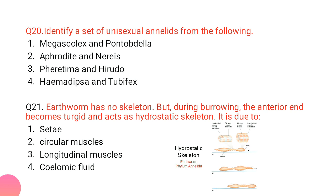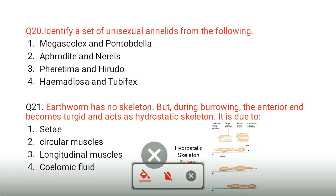Unisexual annelids: in annelids, only one class has unisexual organisms, meaning male and female bodies are different — they are dioecious. Aphrodite (sea mouse) and Nereis both have many setae and belong to Polychaeta. Therefore, Aphrodite and Nereis are the unisexual annelids.